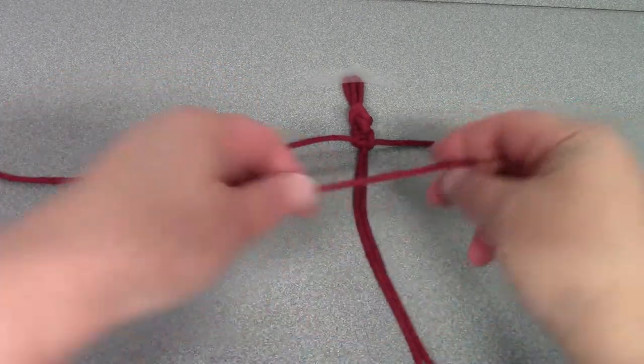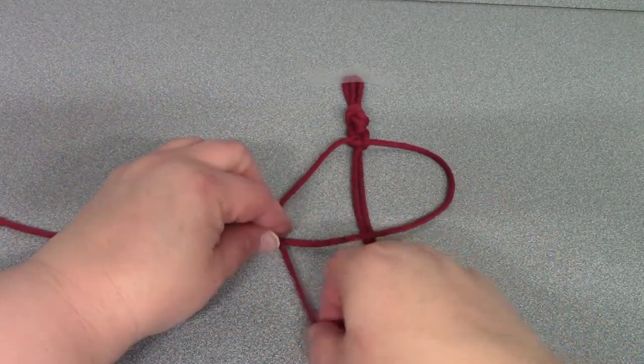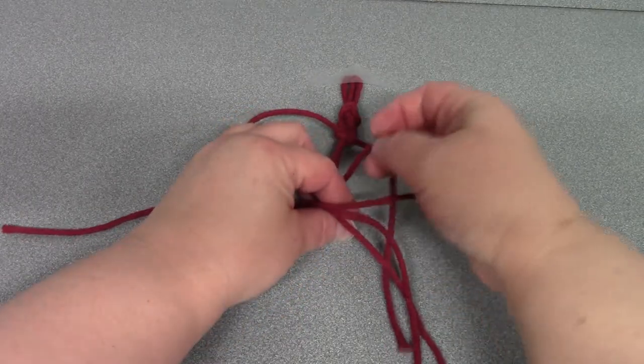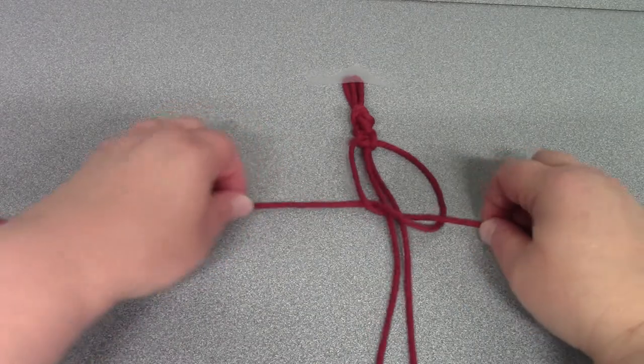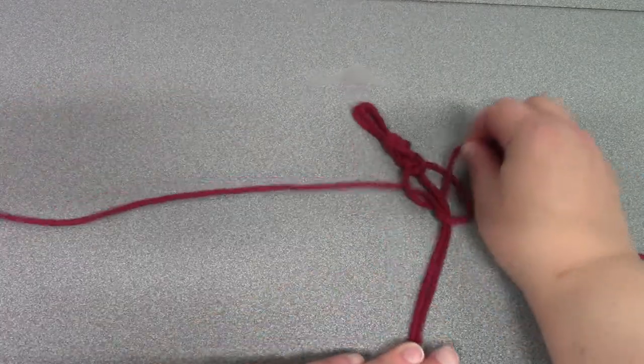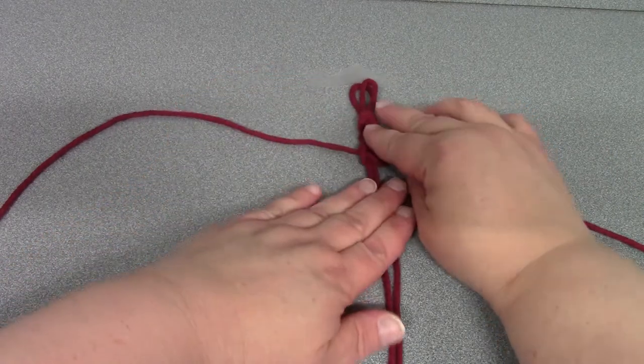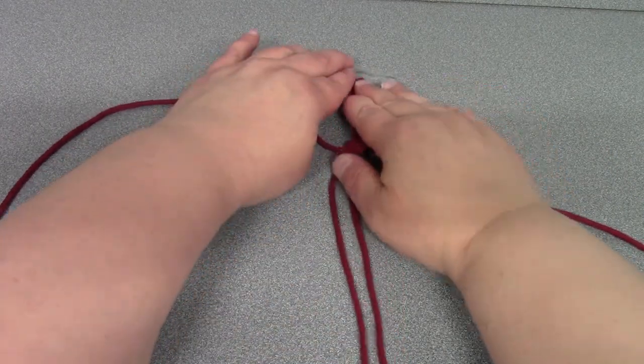Right cord over the middle cords, left cord over the top of that right cord you just passed over, underneath the middle cords, through the loop, and tighten it up again. Oops, I just see how that moves when I'm not secured. This is why you want to have things taped down.